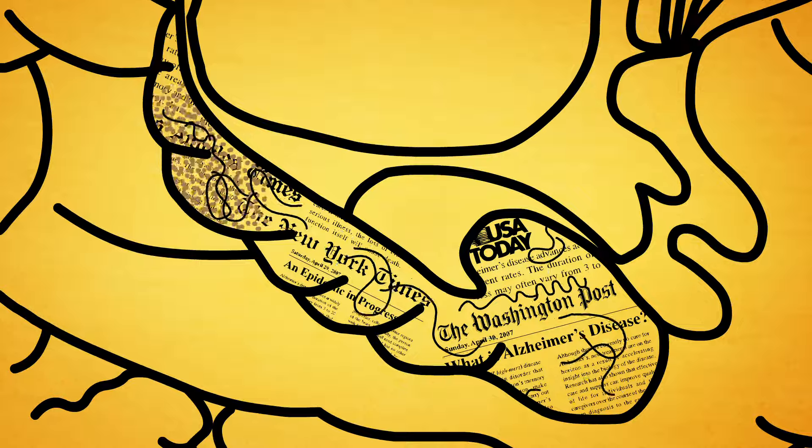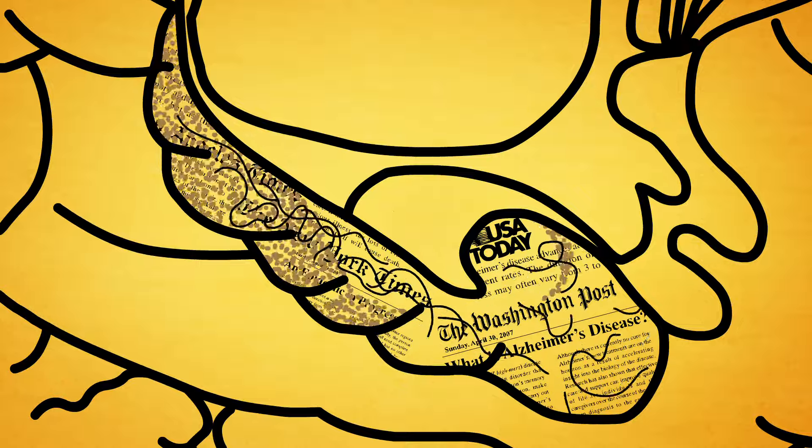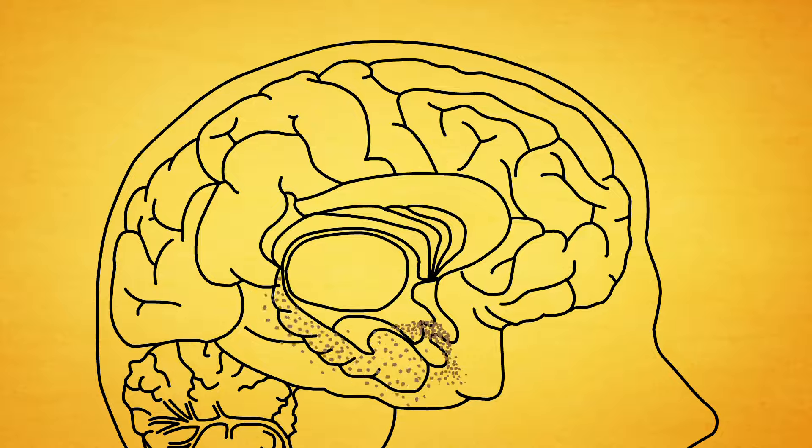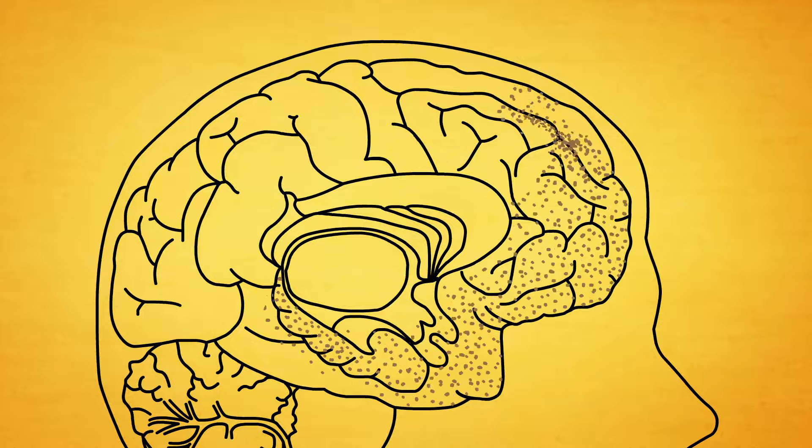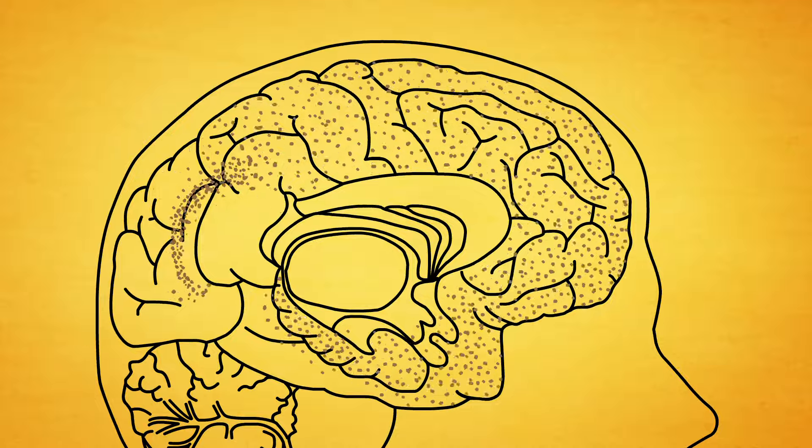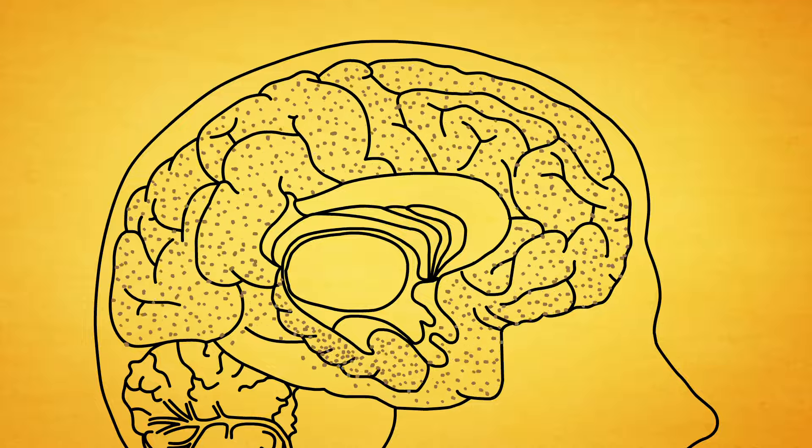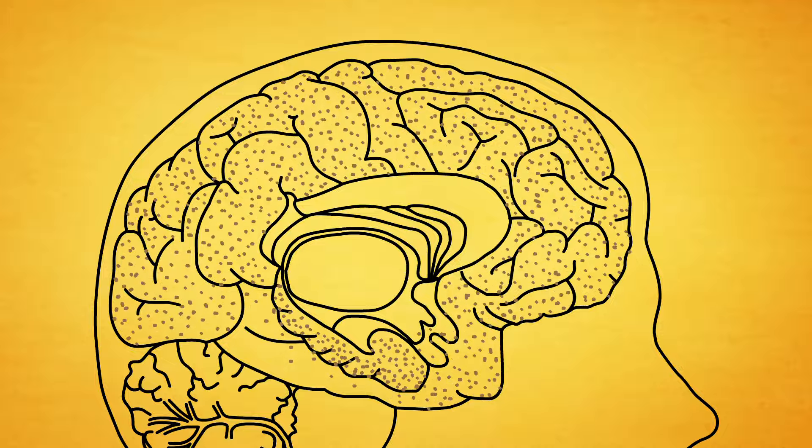Simple recollections from a few hours or days ago that the rest of us might take for granted are just not there. After that, more plaques and tangles spread into different regions of the brain, killing cells and compromising function wherever they go. This spreading around is what causes the different stages of Alzheimer's.